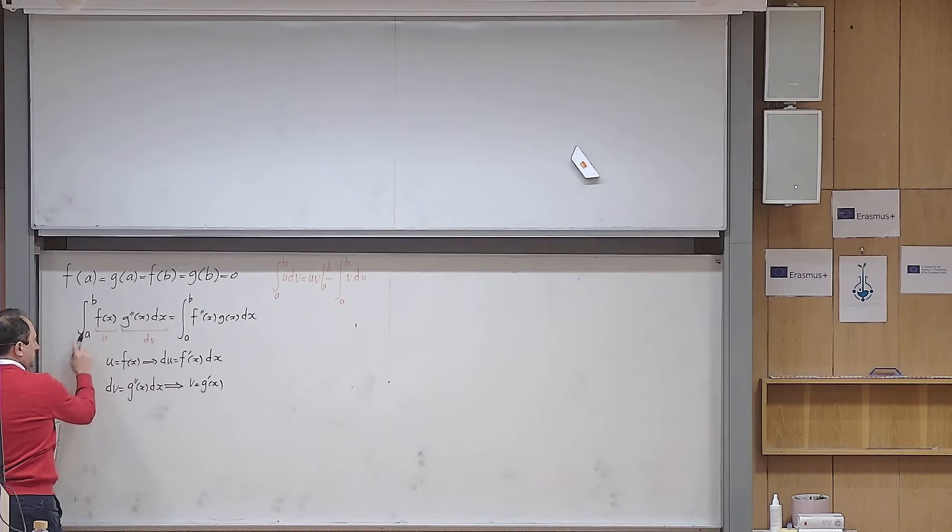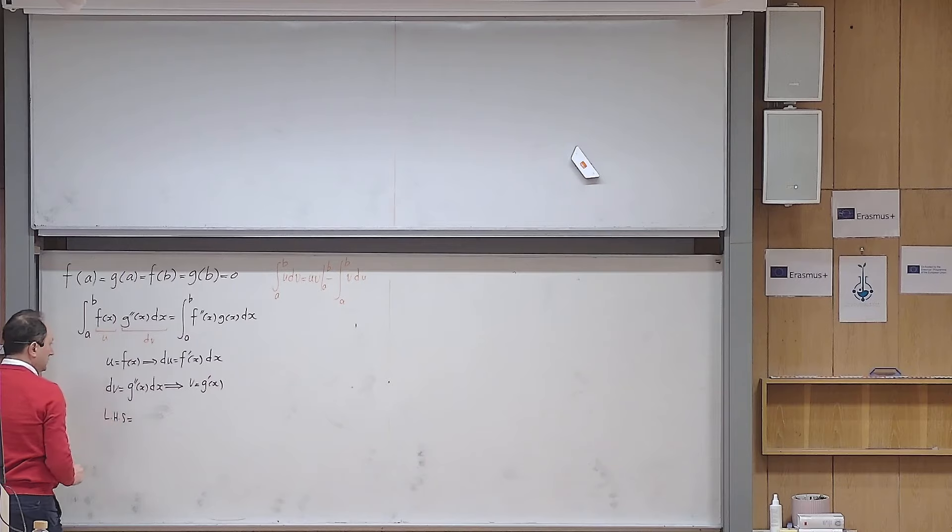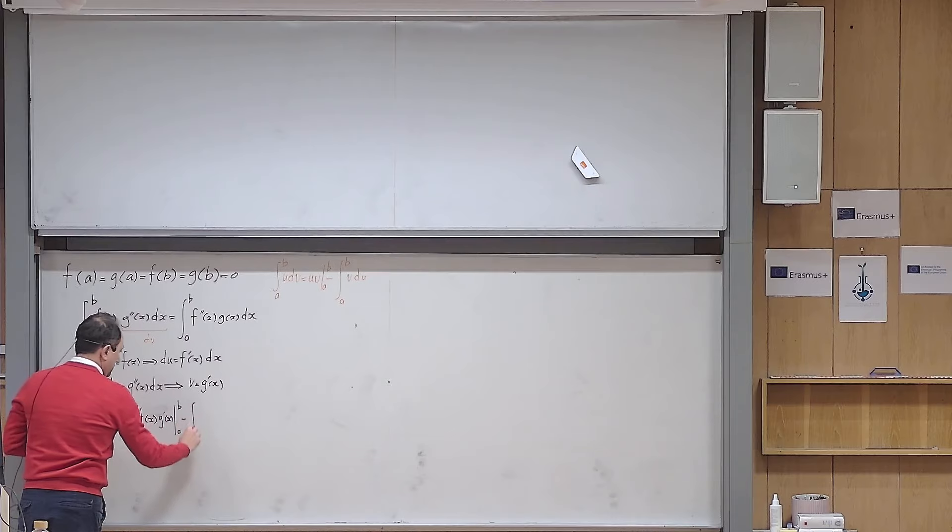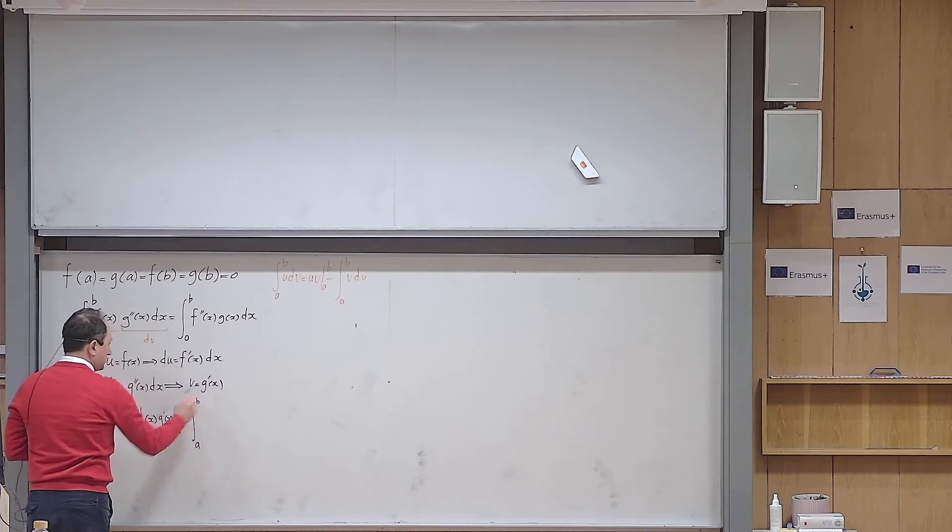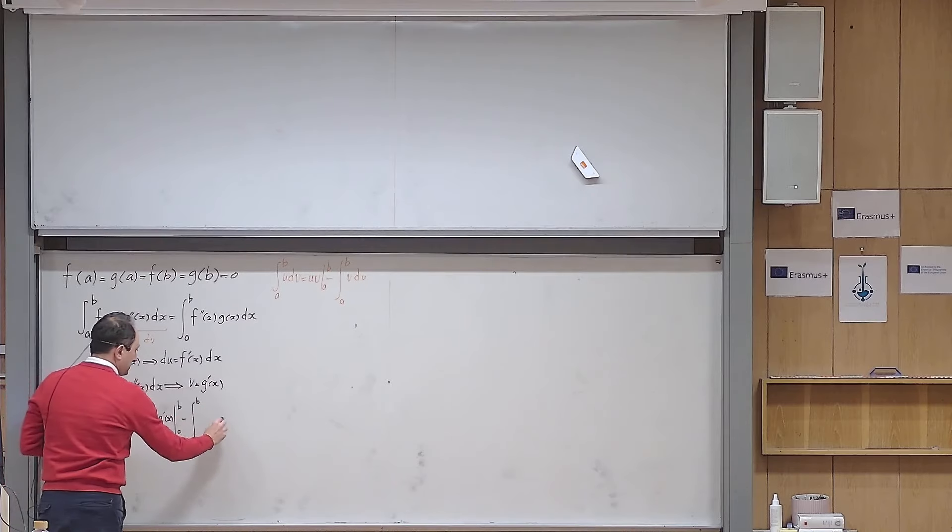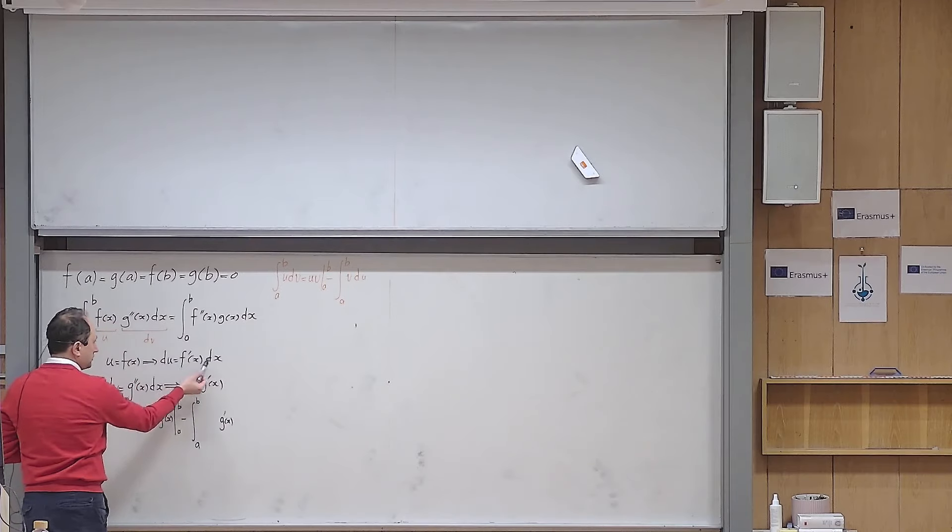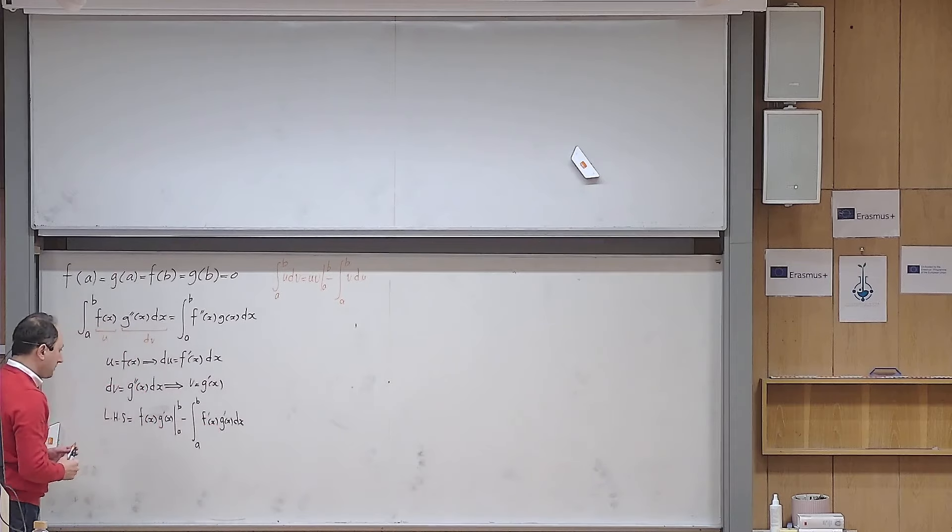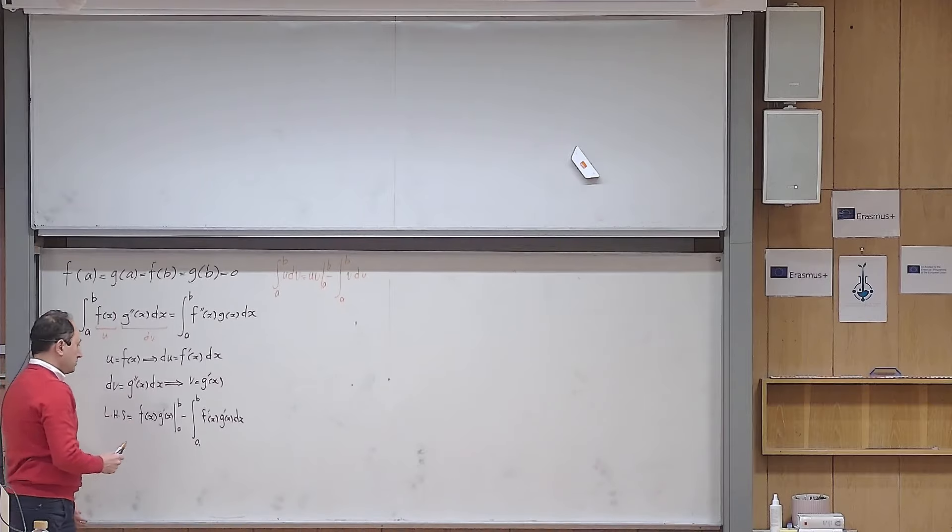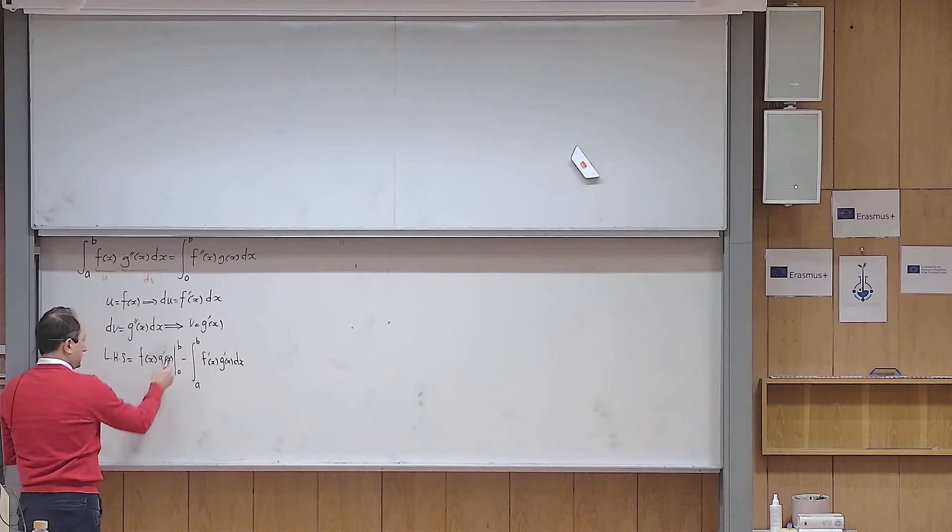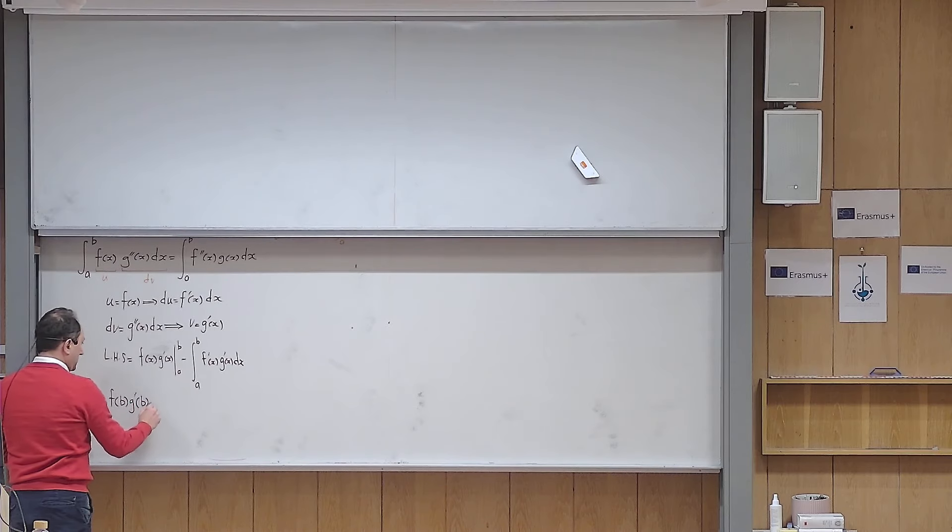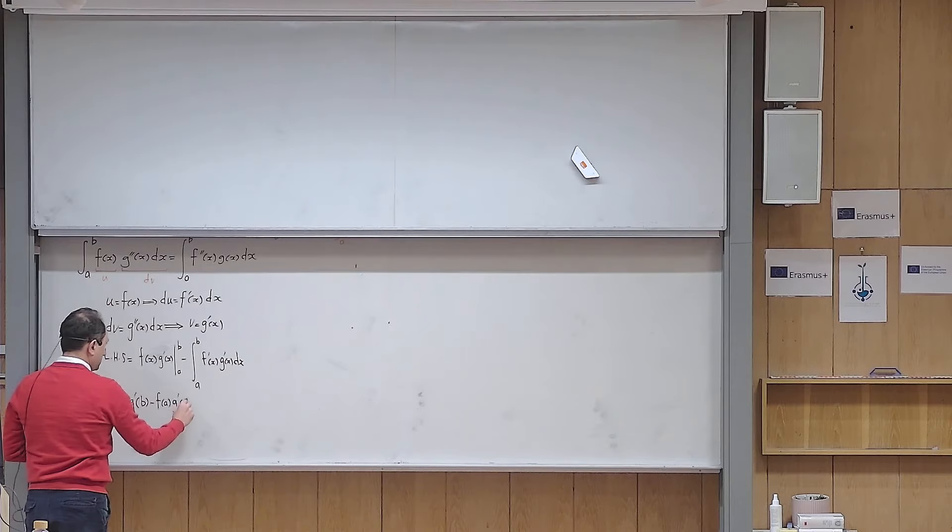So I would say that now the left hand side is equal to u times v, which is f(x)g'(x) from a to b minus the integral from a to b of v du. So v, let me write it here. And du consists of two parts. So let me write dx here and f'(x) here. I can simply open this up. So what should I do? I need to replace every x with the upper limit. So it will give me f(b)g'(b) minus f(a)g'(a).